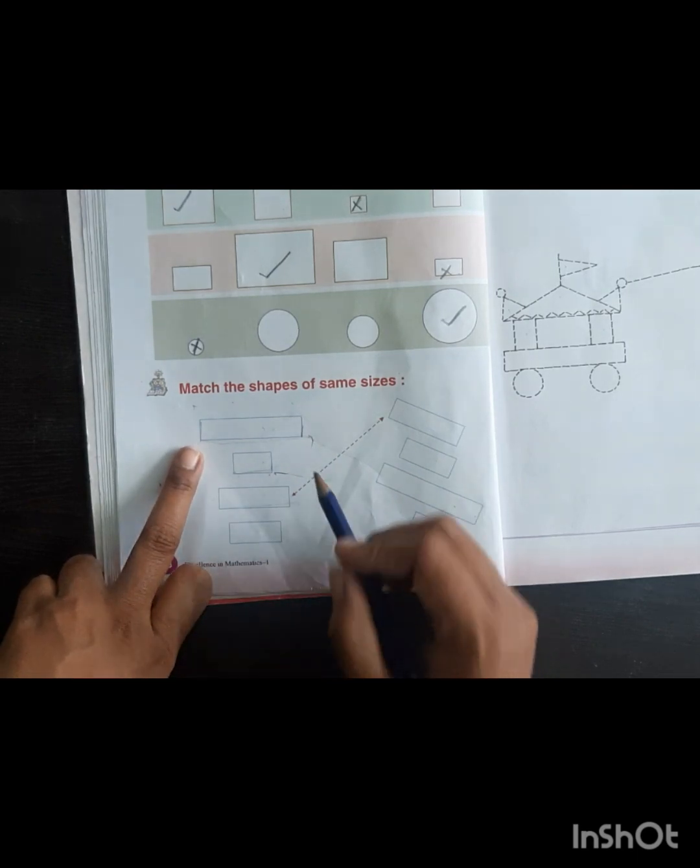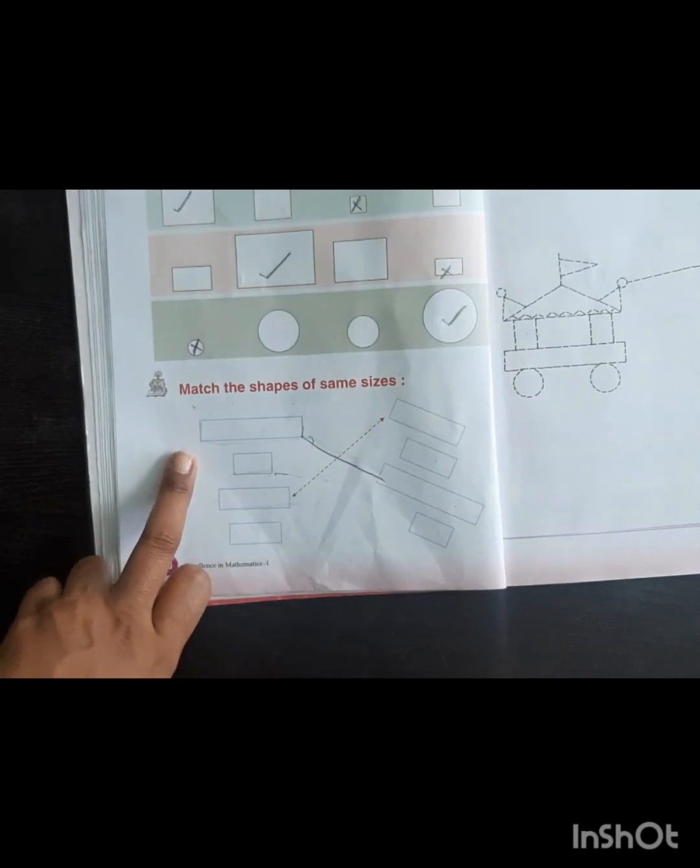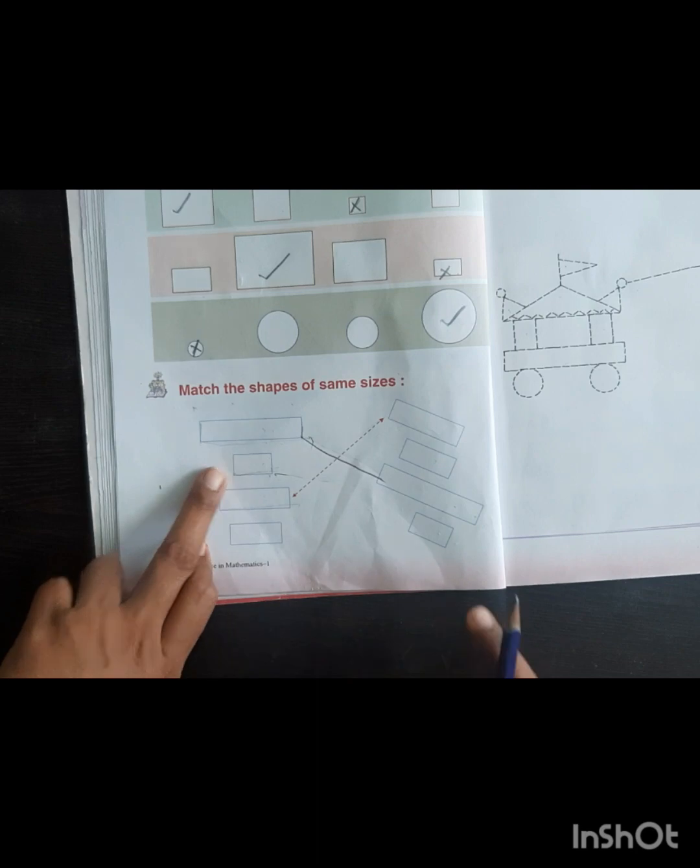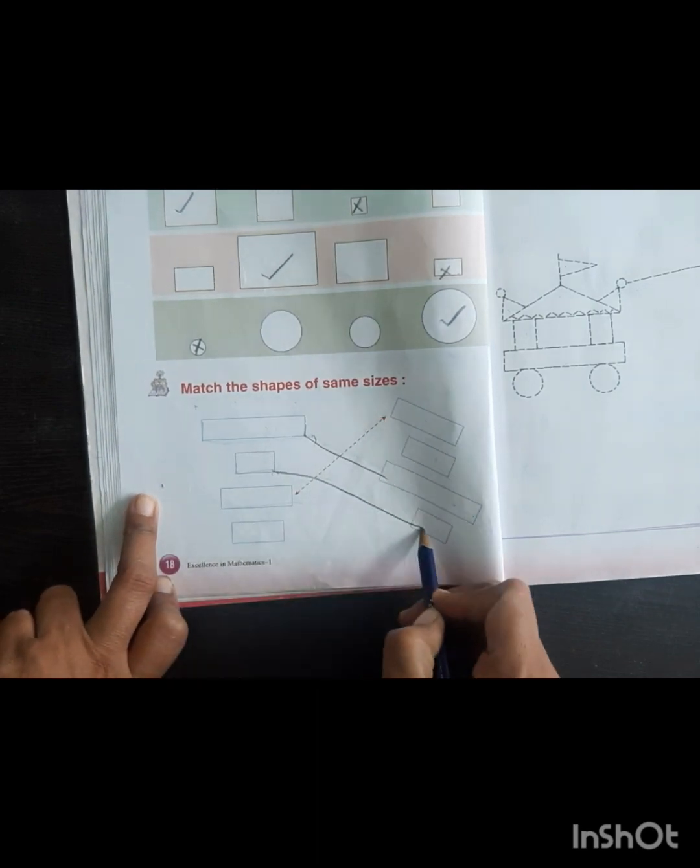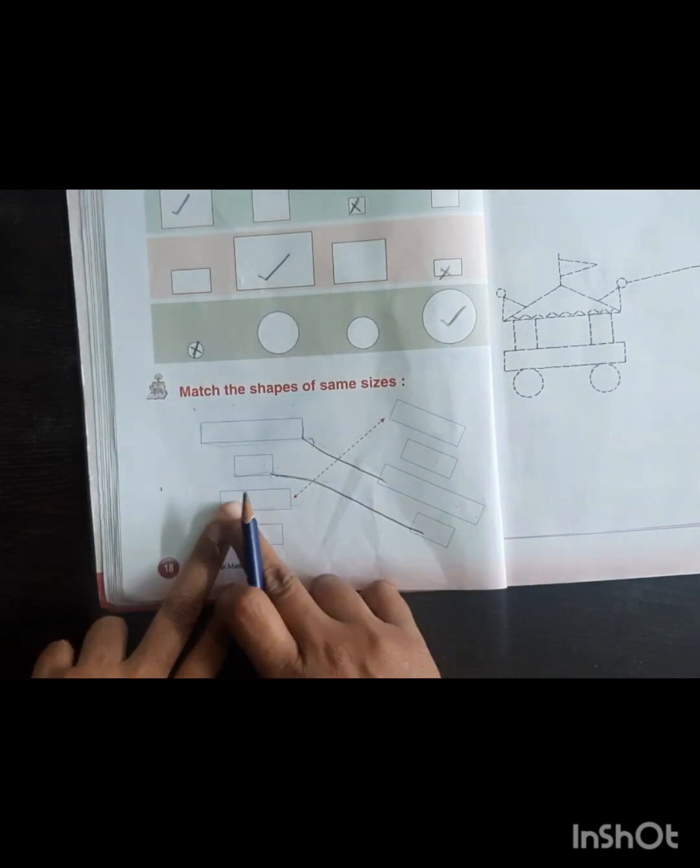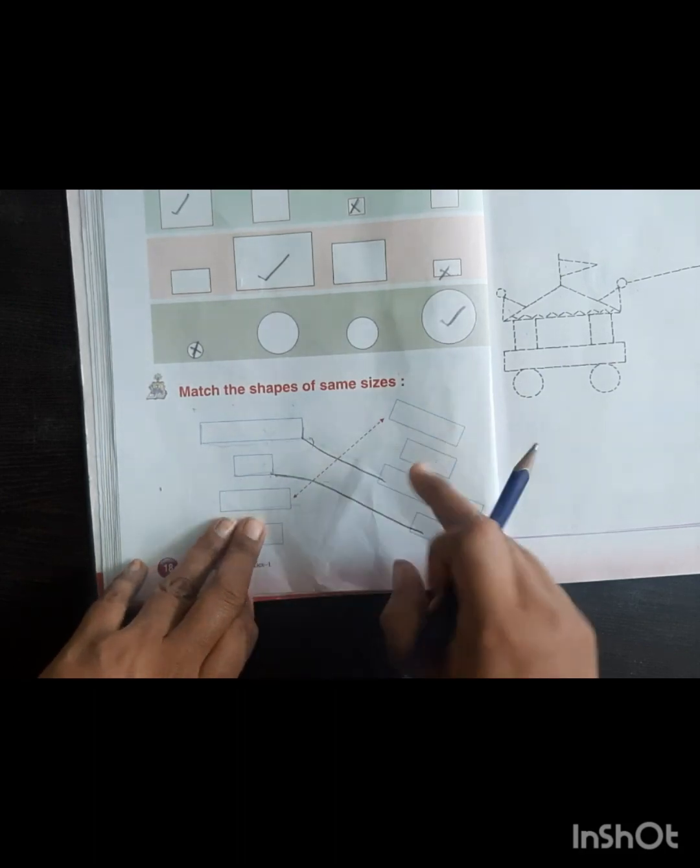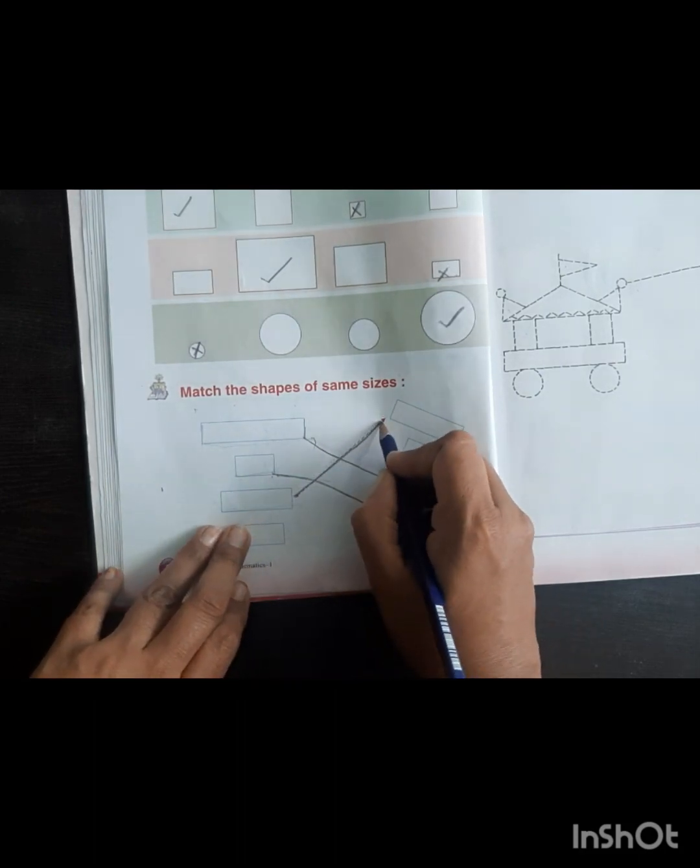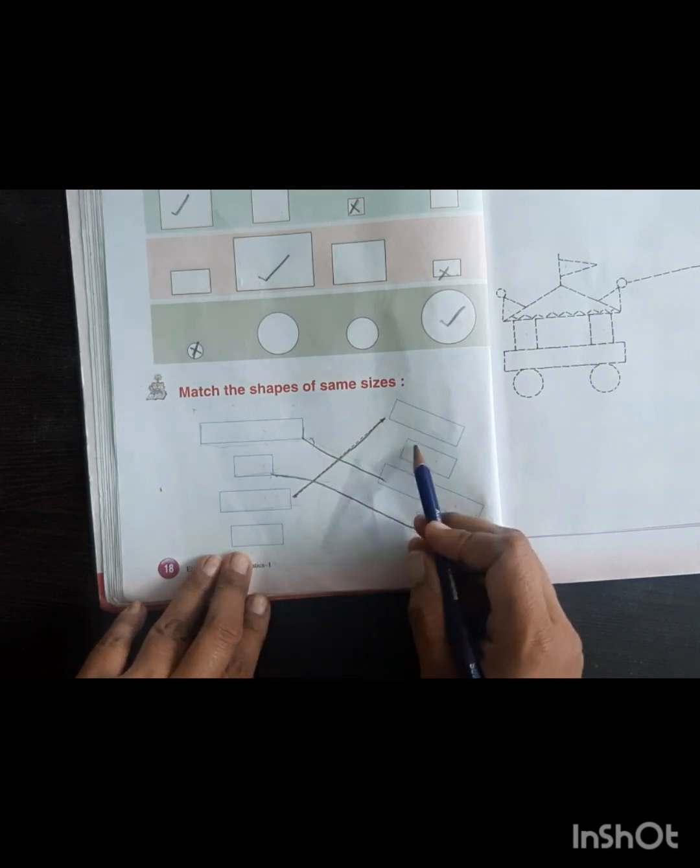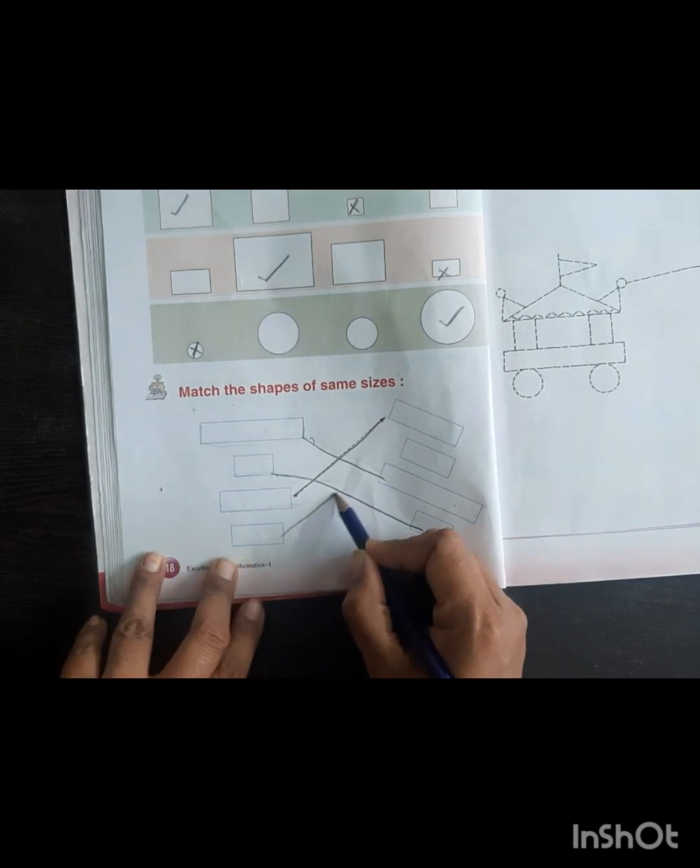This is smallest rectangle and this is also smallest, so we will match these. This breadth and this breadth are equal, so we will match. And this and this also equal, so we will match these.